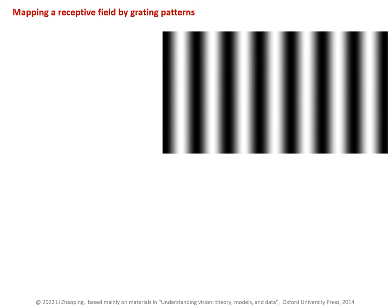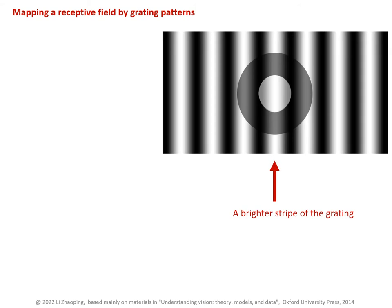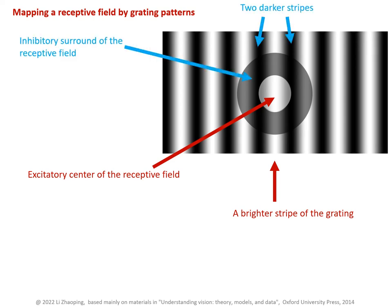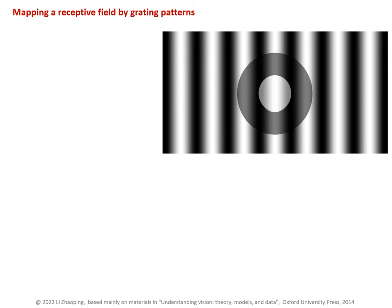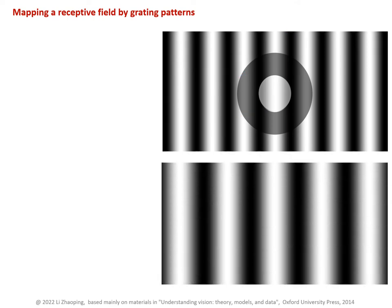Often experiments study receptive fields using grating patterns, which are sinusoidal luminance patterns like this one. This grating should also excite the center surround receptive field to some degree, since a brighter stripe of this grating is at the excitatory center and some darker stripes overlap the inhibitory surround. Relative to this case, when we make the grating stripes a little wider, the neuron should be more excited, since the brighter and darker stripes coincide better with the on-region and off-region of the receptive field.